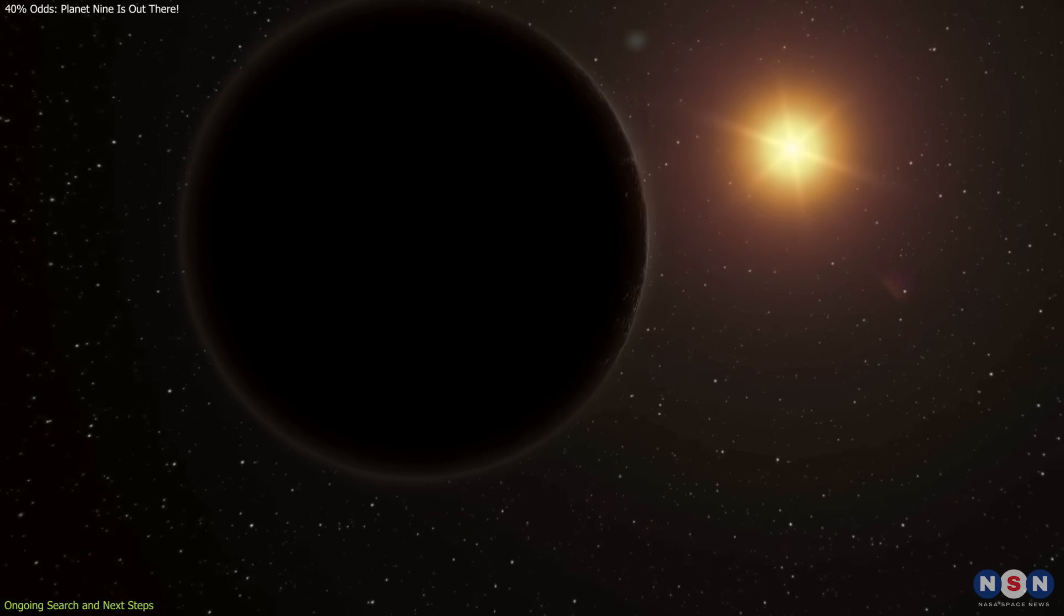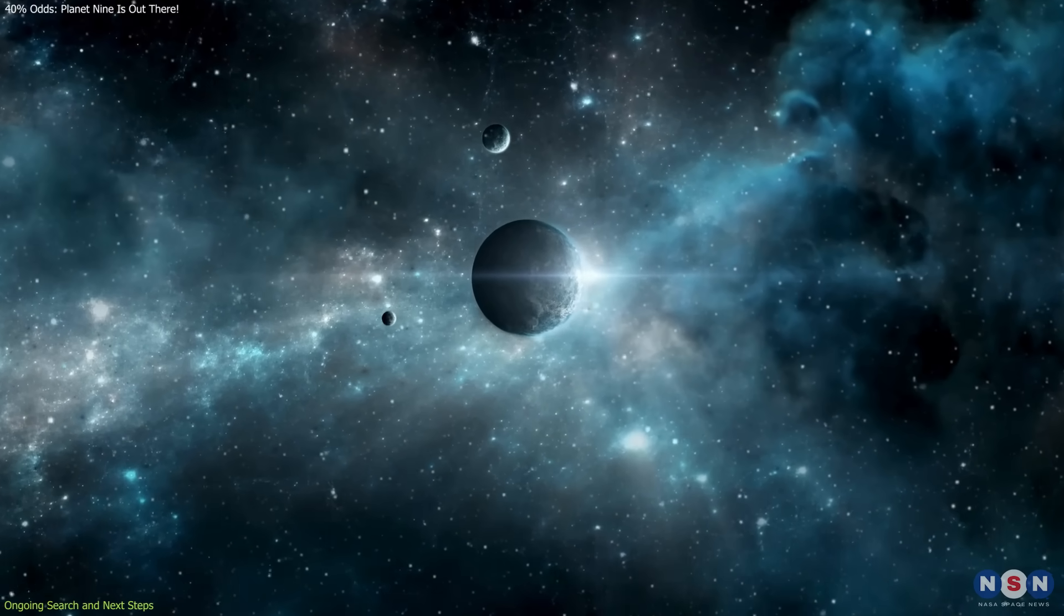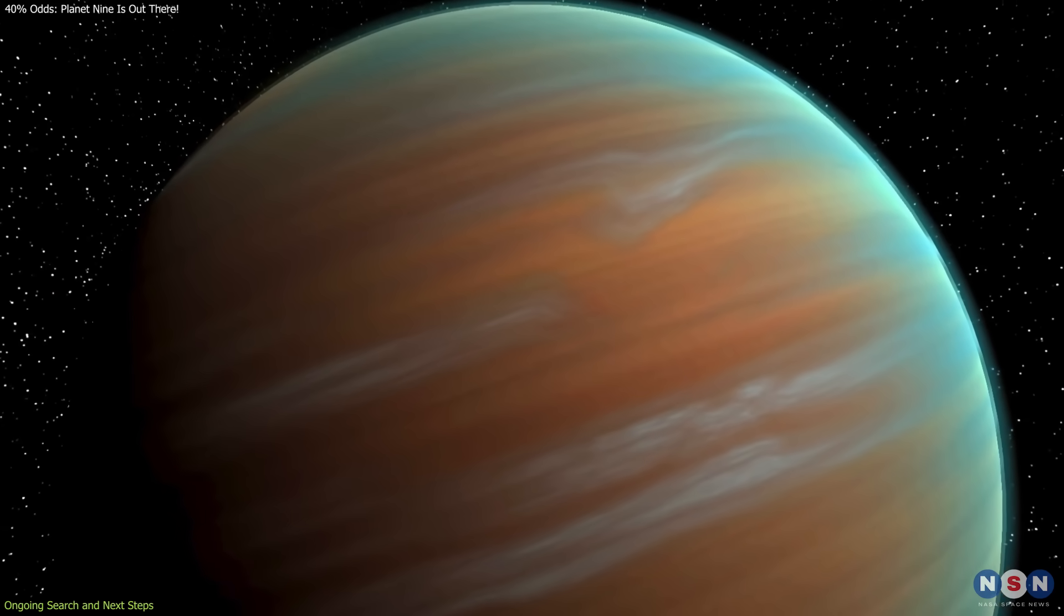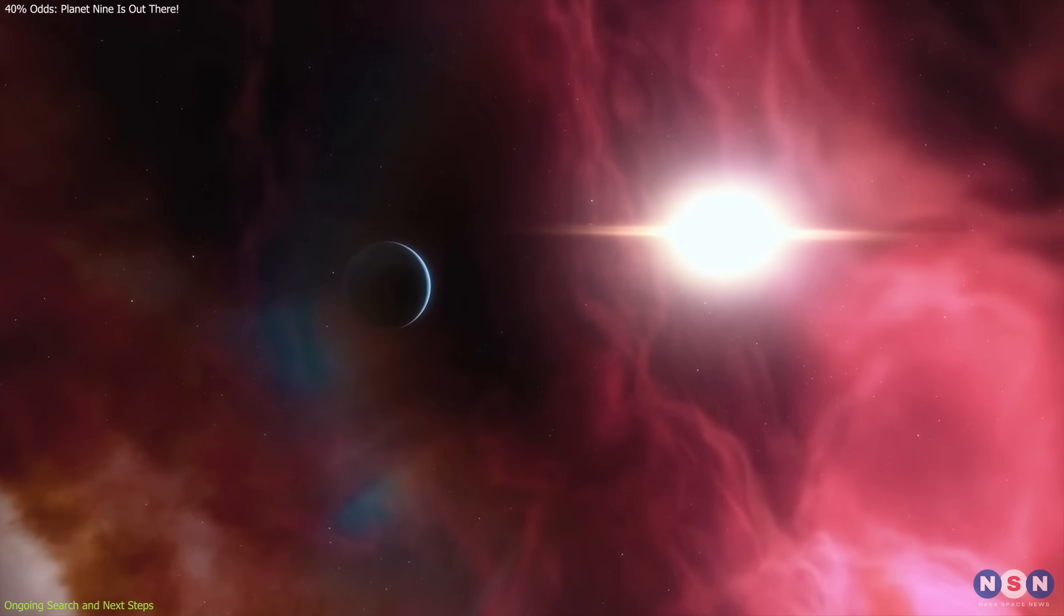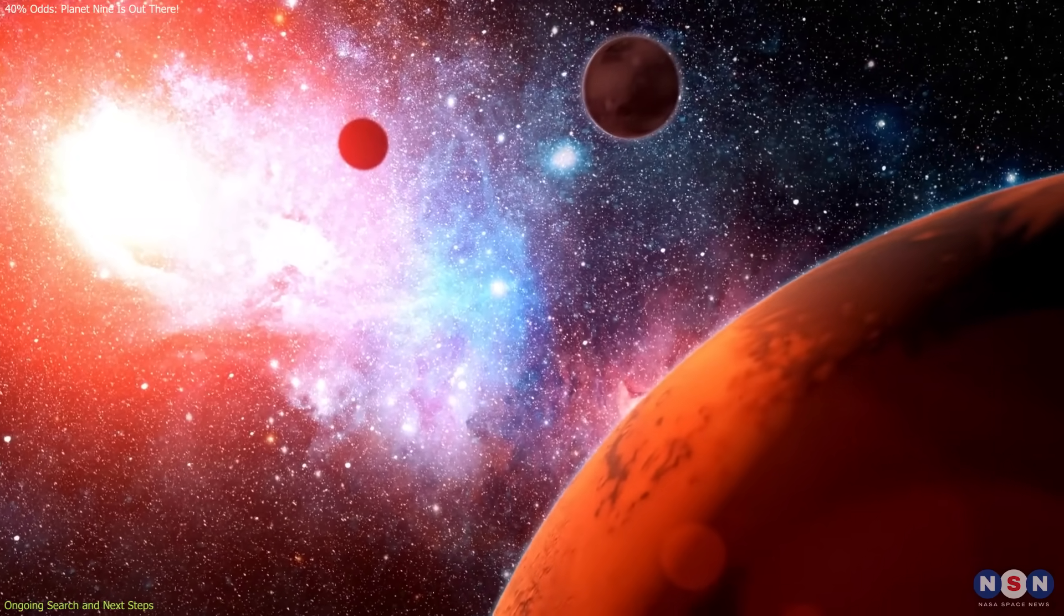Beyond Planet 9, the findings of this study suggest ways to better understand other planetary systems. For example, stars with high metallicity and known gas giants may be more likely to host wide-orbit planets. That gives astronomers a new criterion for prioritizing exoplanet studies.